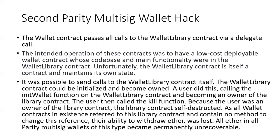Let's talk about the real-life hack that caused a loss of a lot of money. This is the second Parity multisig wallet hack. There were two contracts: a wallet contract and a wallet library contract, which was being called using delegate call — this was before the library keyword was widely used. The intended operation was to have a low-cost deployable wallet contract whose code base and main functionality were in the wallet library contract, so many small wallet contracts would interact with one shared wallet library.